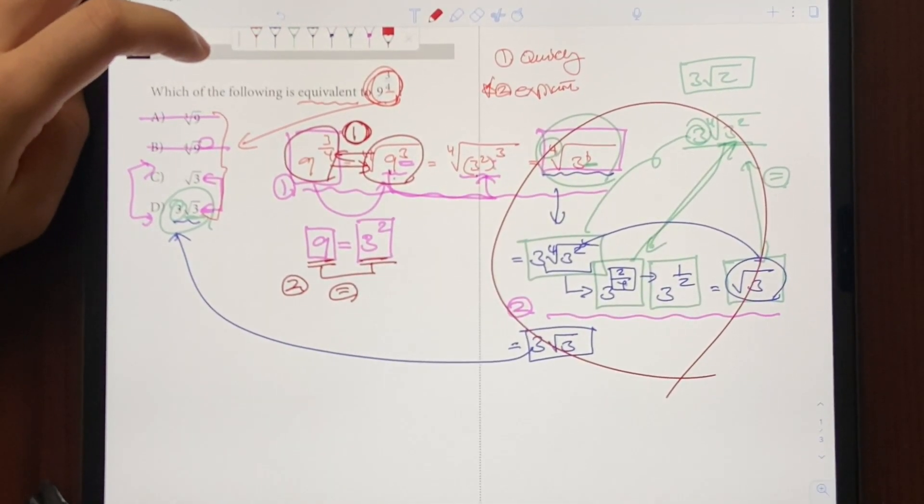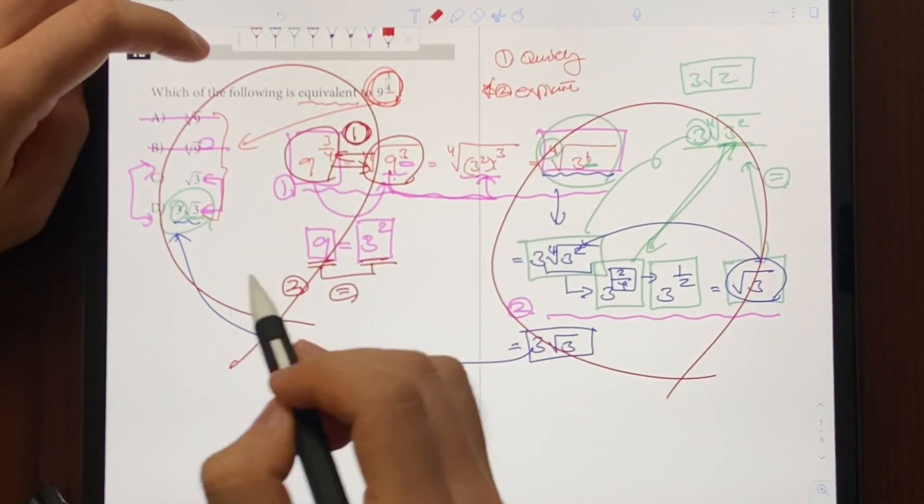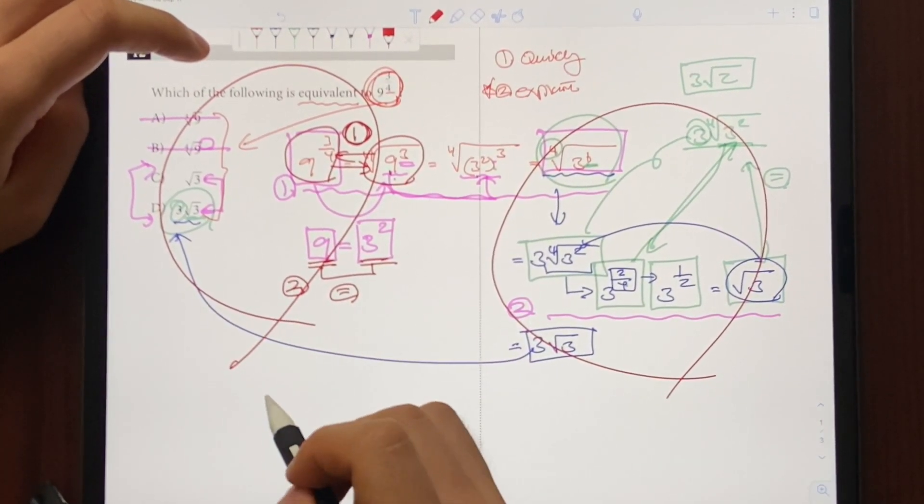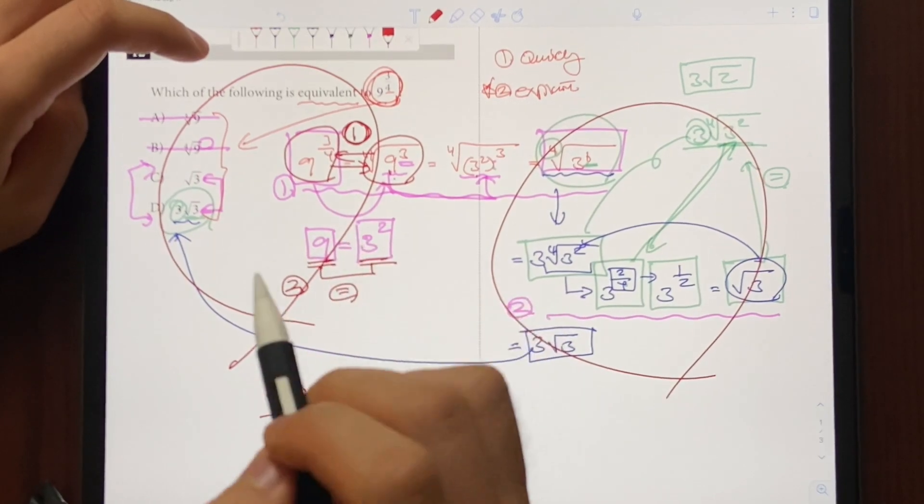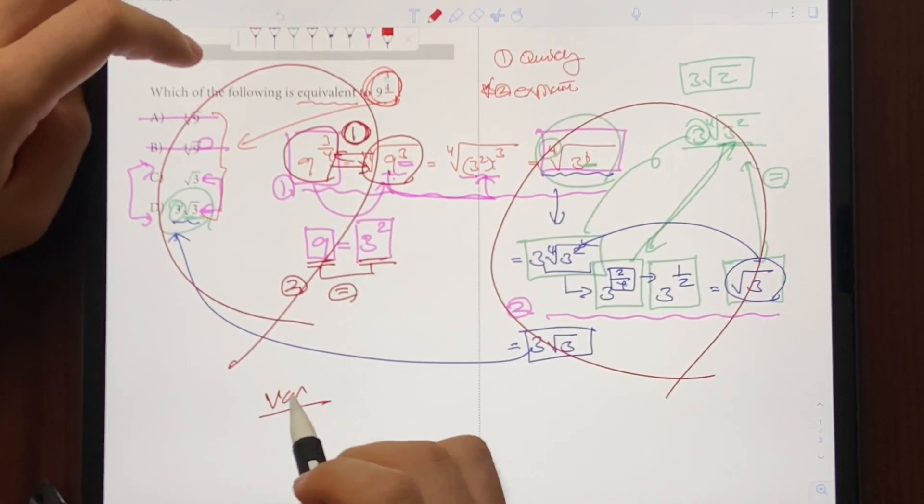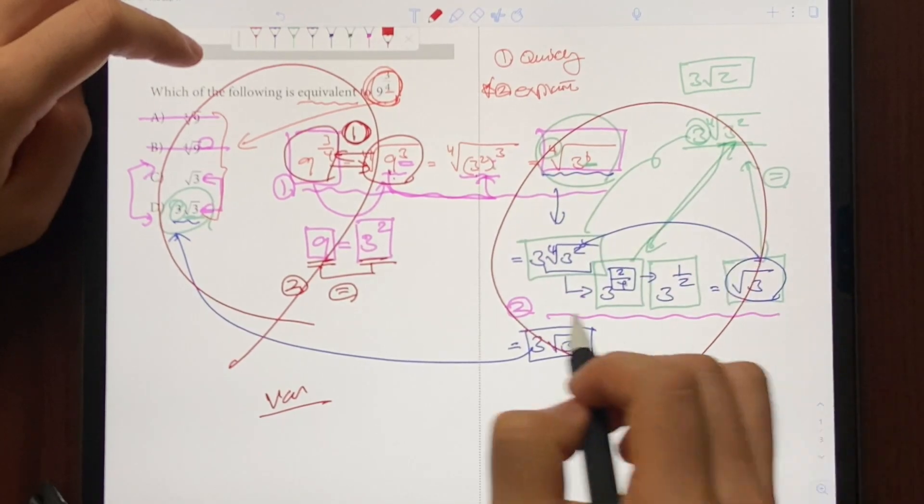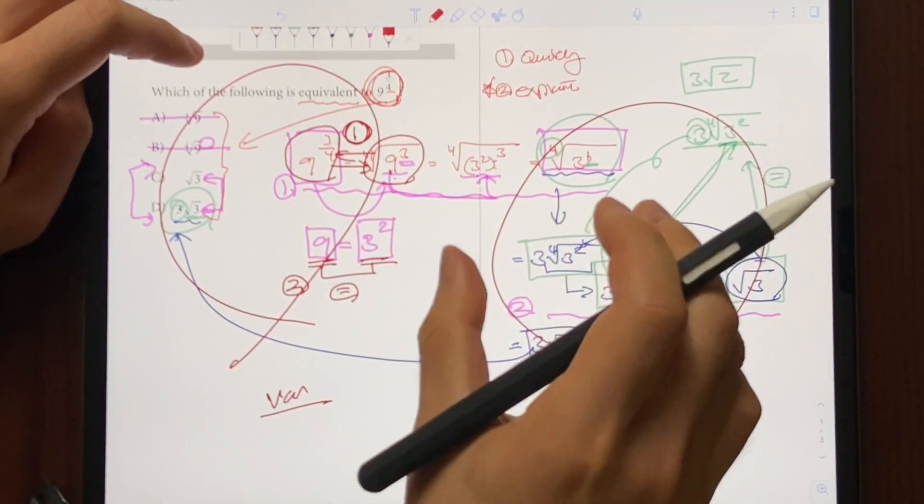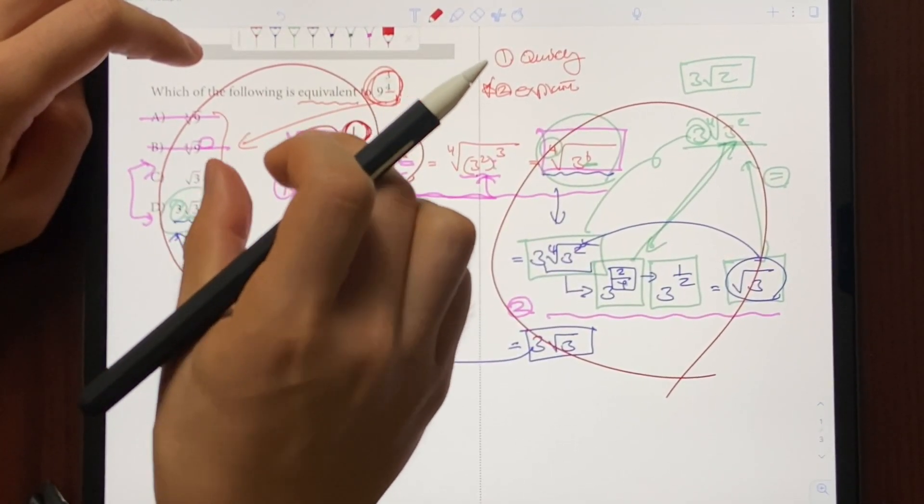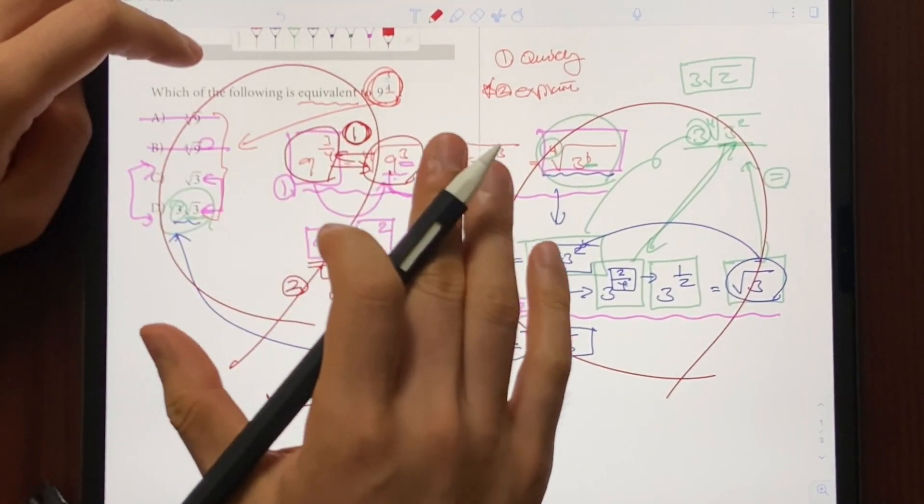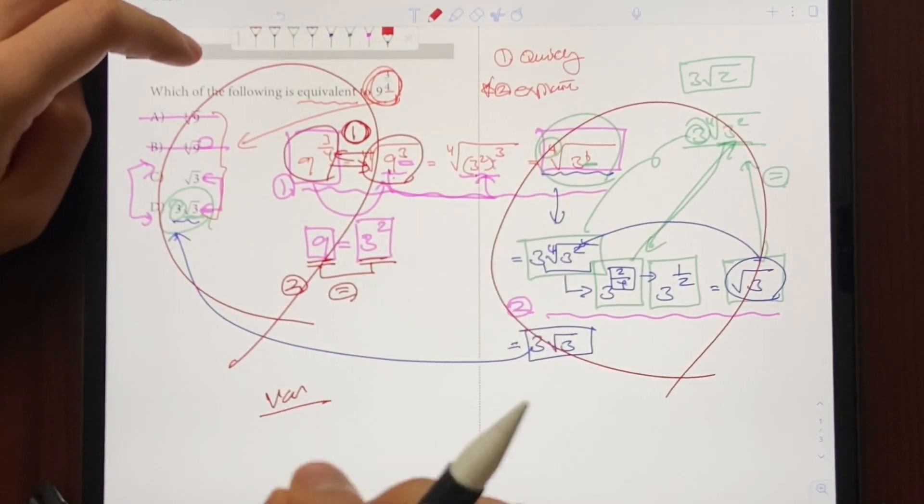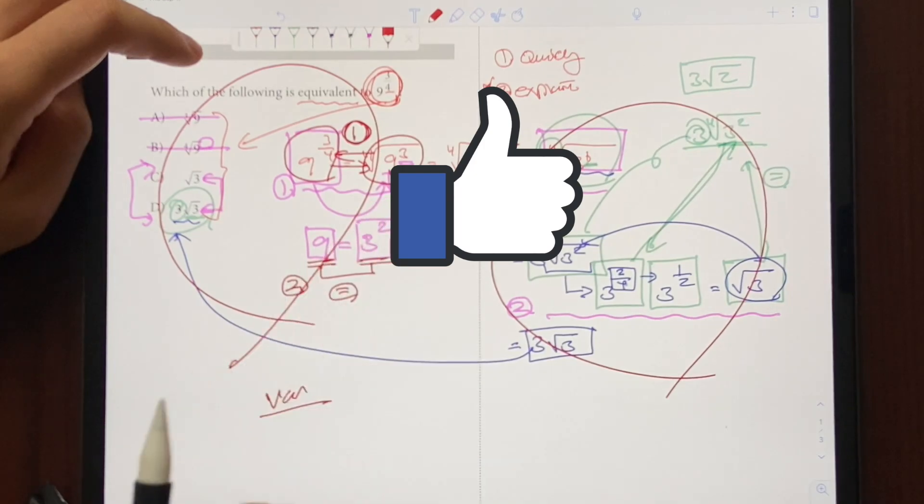And the most important takeaway from this question is that this exact question will never show up on the SAT again. However, a different variation of this question will show up. And in order for you to solve future variations, you have to understand what exactly went down. Because if you just memorize these steps, you can only solve this question, this exact question. But this one is never showing up again. So that's going to be it for this question. Give a thumbs up if you found this video helpful, and I'll see you guys on the next video.